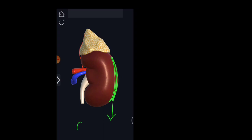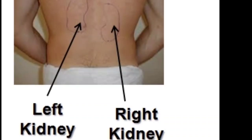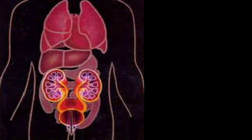Each kidney is convex on the outer side and concave on the inner side. The right kidney is placed slightly lower than the left kidney. Do you know the reason for arranging it such a way? The reason is due to the location of the liver above the right kidney. So the right kidney lies 1 to 2 cm lower than the left kidney.